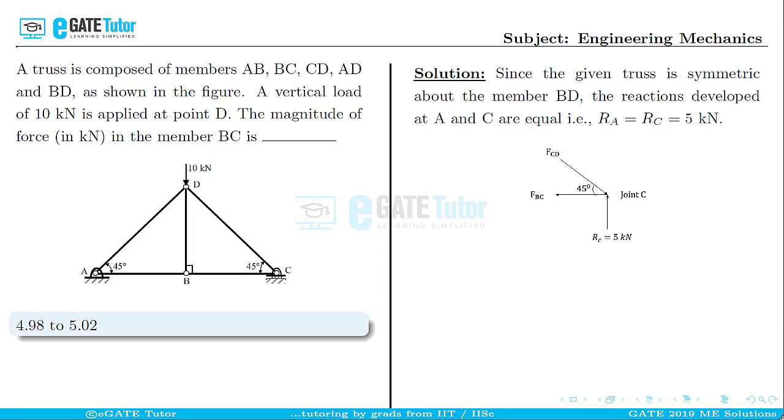we apply the sum of vertical forces to be equal to zero, or ΣFy = 0. We get FCD sin 45° which is downwards should be equal to the reaction at joint C, which is RC. So, RC = 5. Substituting that and simplifying will give us the force in member CD as 7.07 kN.